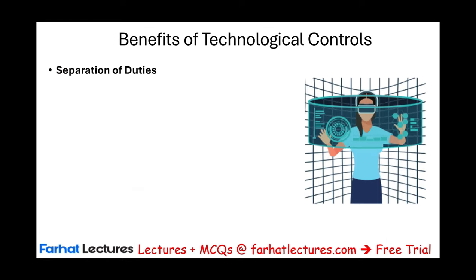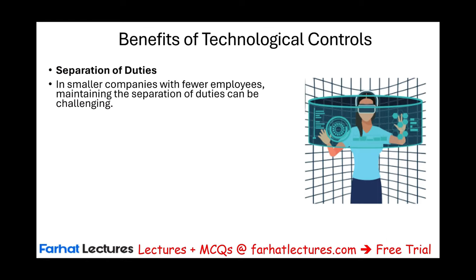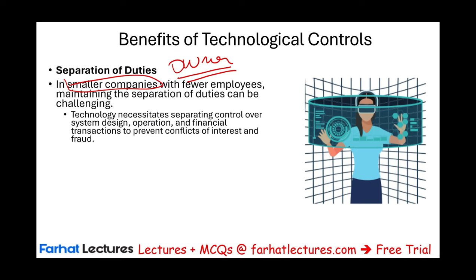Keeping a detailed trail enhances internal control. Another benefit is separation of duties. In smaller companies, separation of duties can be challenging because one individual may take on multiple conflicting roles — for example, record keeping and custody of assets. In small companies, the owner takes care of everything, but as the company gets larger, the owner cannot keep track of all things — this is where technology helps.